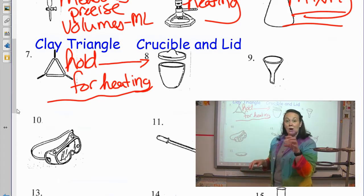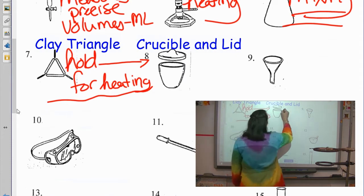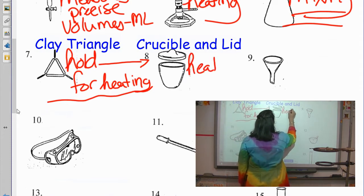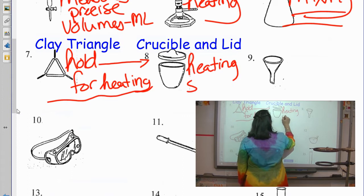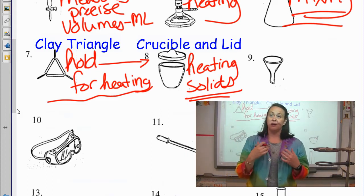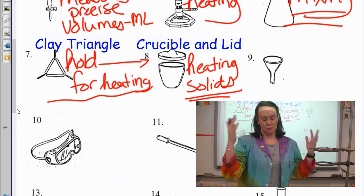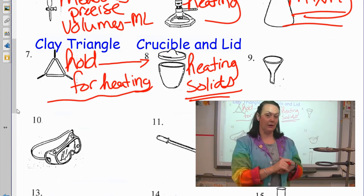Crucibles are for heating dry solids. So, I'm sorry, just heating solids in general. When we do dehydrations, when we heat some metals, things like that, we will need to be using crucibles and with or without the lids, depending on the lab.